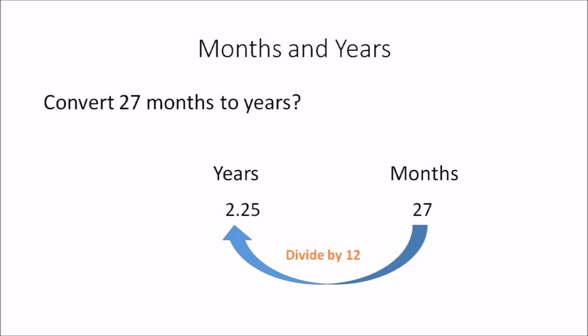In this example, convert 27 months to years. Again you're just converting months back to years, so 27 divided by 12 will give you 2.25 years.